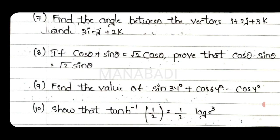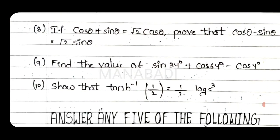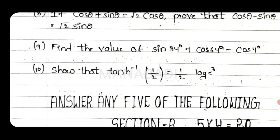Eighth question: given cos theta and sin theta equals under root 2 cos theta, prove that cos theta minus sin theta is equal to under root 2 sin theta. Ninth question: find the value of sin 34° plus cos 64° minus cos 4°. Tenth question: show that tanh inverse of 1/2 equals to half log 3.